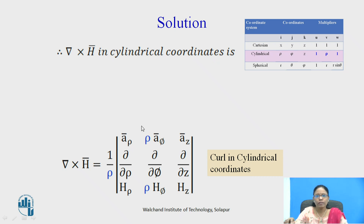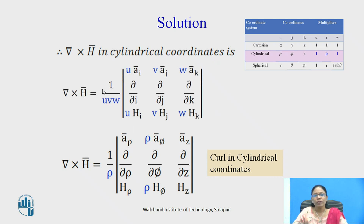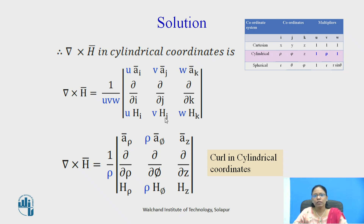Let us write curl h-bar in cylindrical coordinate system with these multipliers. In the generalized equation we put u=1, v=ρ, w=1, whose product is ρ, giving a factor of 1/ρ outside. The unit vectors become a_ρ, ρ·a_φ, a_z; the partial derivatives are ∂/∂ρ, ∂/∂φ, ∂/∂z; and the components become h_ρ, ρ·h_φ, h_z. This is curl h-bar in cylindrical coordinate system.